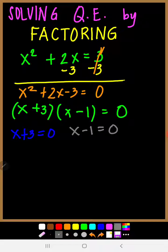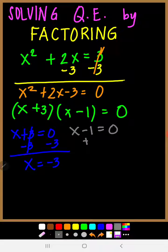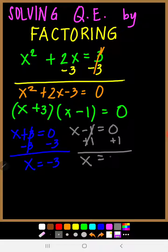Now we find the value of x. For the first equation, x plus 3 equals 0: subtract 3 from both sides, giving x equals negative 3. For the second equation, x minus 1 equals 0: add 1 to both sides, giving x equals 1.